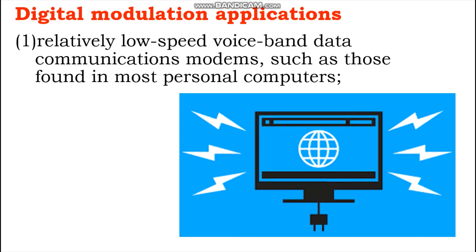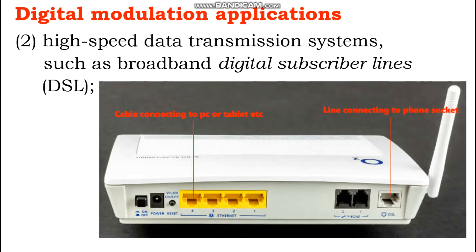Digital modulation is ideally suited for a multitude of communication applications, including both cable and wireless systems. Number one is relatively low-speed voiceband data communication modems such as those found in most personal computers. Second, high-speed data transmission systems such as broadband digital subscriber line (DSL), which is generally used for broadband communication systems.